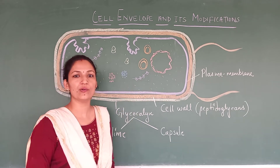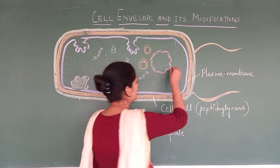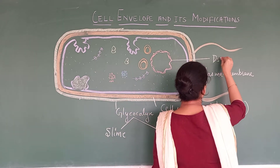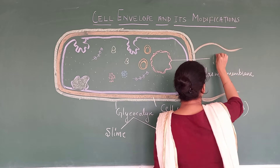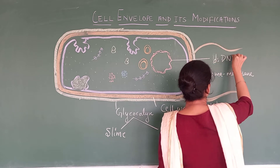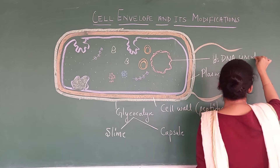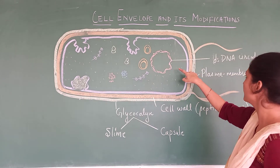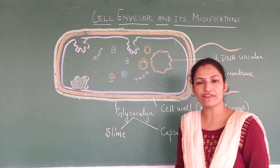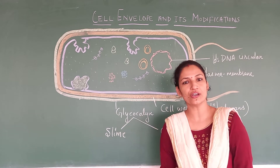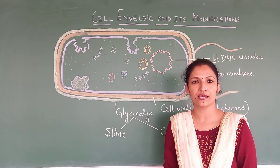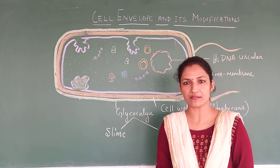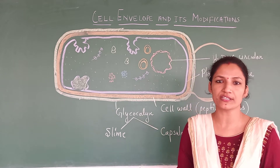First, we are going to discuss about the DNA. This is double-stranded, circular DNA. In the DNA of bacterial cell, histone proteins are not present while packing up this DNA. Some other kinds of proteins may be present, but histone proteins are not present.